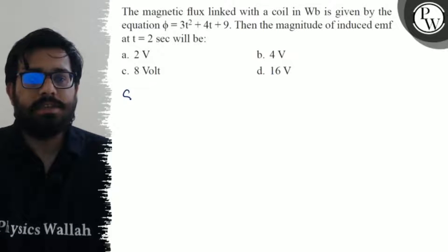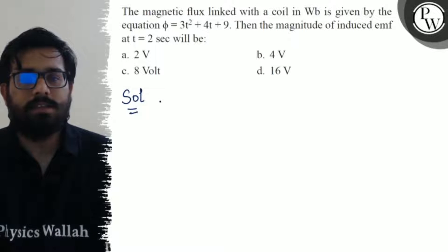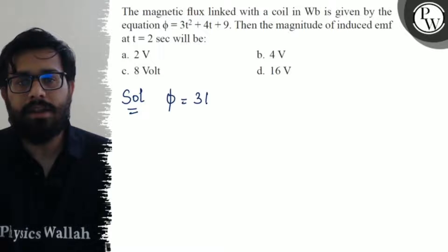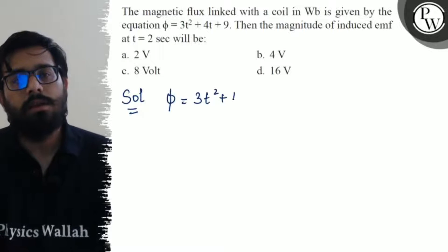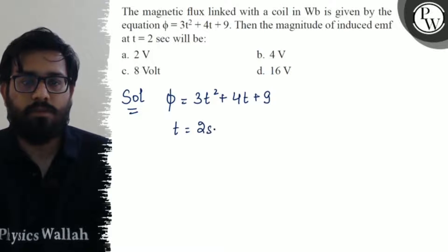The fourth option is 16 volt. So first of all, let's see the given data. We have the flux as φ = 3t² + 4t + 9, the time is given as 2 seconds, and we have to calculate the induced emf at 2 seconds.